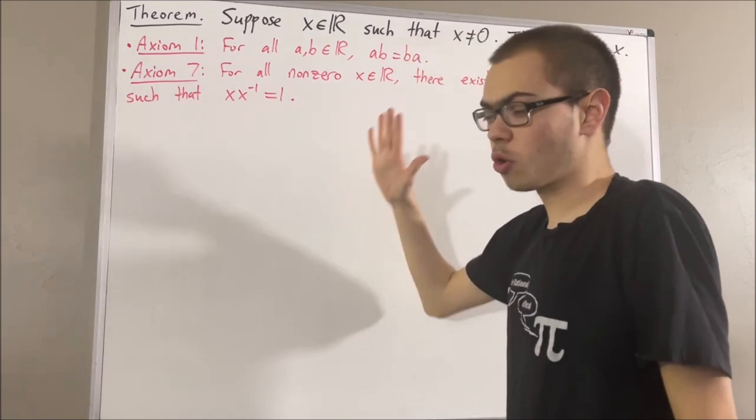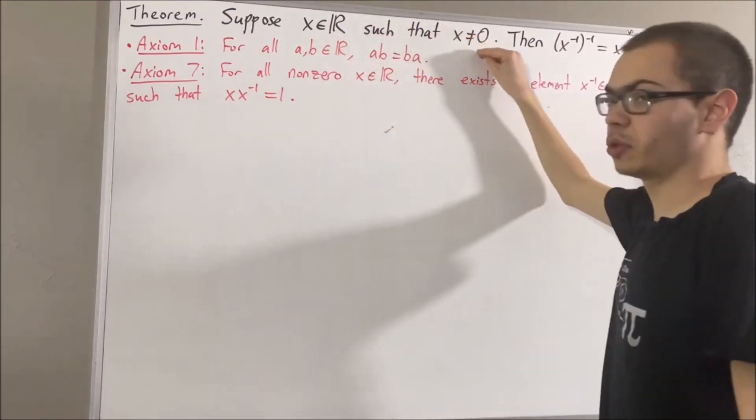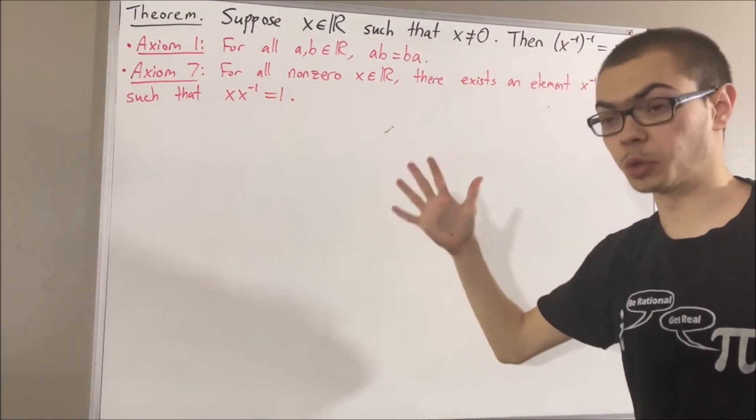Now, at this point, we have proven that if x is a real number and x is not equal to 0, then the reciprocal of x is not equal to 0 as well.